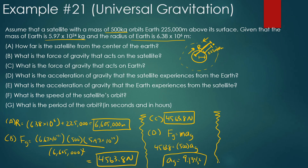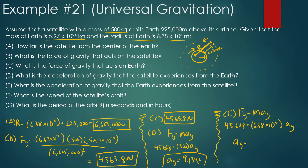Part E: what is the acceleration of gravity that the Earth experiences from the satellite? The Earth experiences the same force, 4,563.8 N, but the mass of Earth is so much more. Using F = m × g: 4,563.8 / (5.97 × 10²⁴) — wait, actually using 4,563.8 divided by 6.38 × 10⁶ as given — we get approximately 0.00072 m/s². It's a lot less.